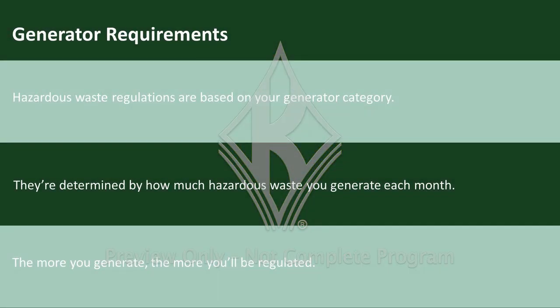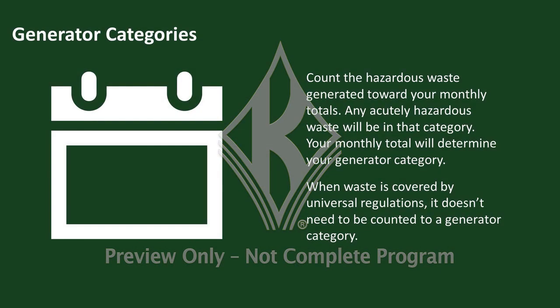The EPA's hazardous waste regulations are based on your generator category, determined by how much hazardous waste you generate each month. The more waste you generate, the more regulated you are. You must count all hazardous waste you generate toward your monthly totals. This includes acutely hazardous waste, which is more hazardous than others and can be dangerous for humans. Your monthly total will determine your generator category.